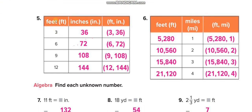Feet to inches: 1 foot = 12, 3 feet = 36, 6 feet = 72, 9 feet = 108, 12 feet = 144 — multiplying by 12 each time. Miles to feet: 1 mile = 5,280 feet, 2 miles = 10,560, 3 miles = 15,840, 4 miles = 21,120.